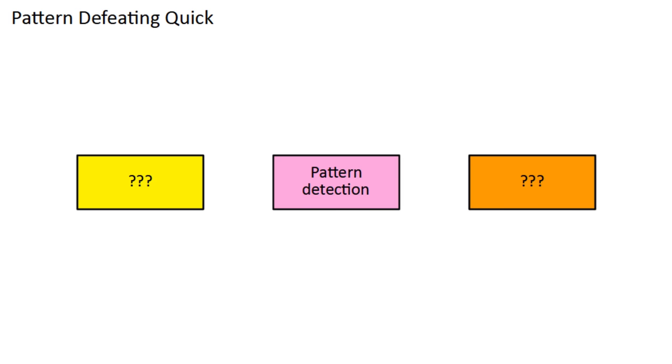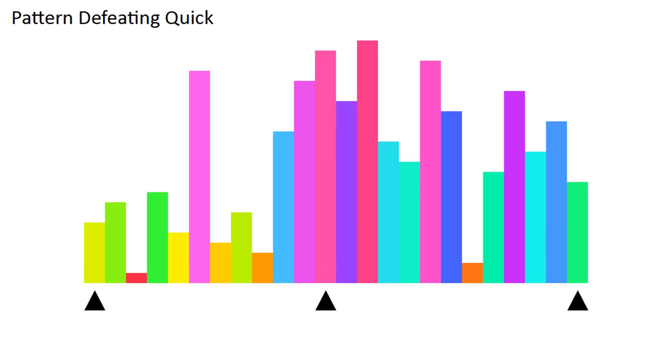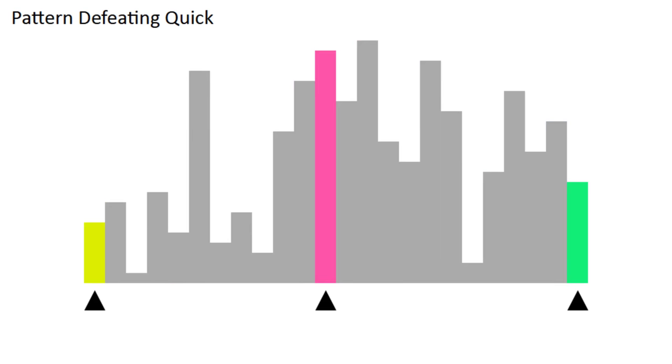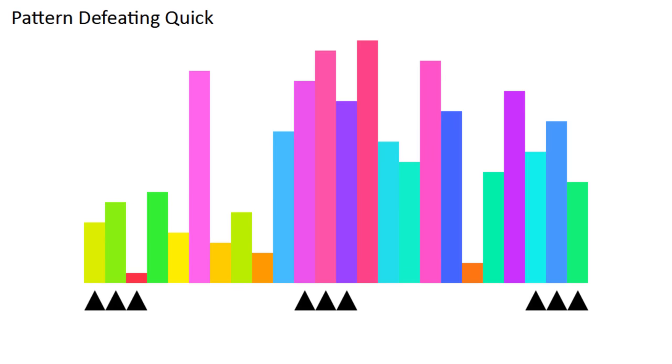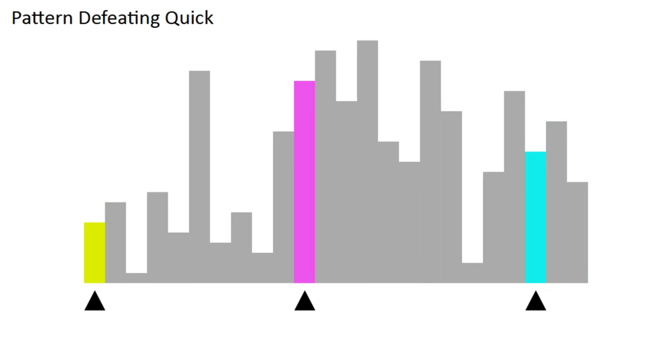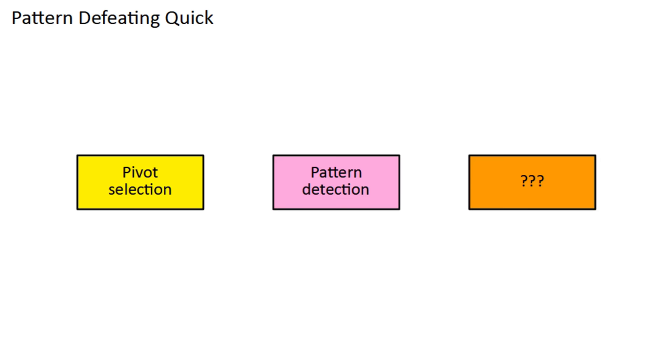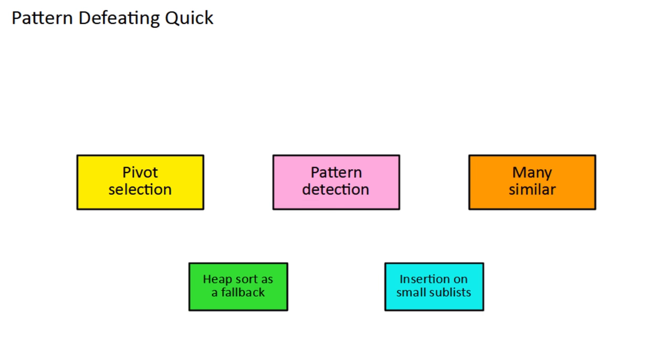Pattern-defeating Quicksort also chooses the pivot differently. It looks at the first, last, and middle pieces, and takes the median of the 3 as a pivot. And for sublists bigger than 128, it actually takes 3 medians and uses the median of those medians. This makes bad partitions a lot less likely, but still possible. Even in the worst case though, there is still the backup of Heapsort.